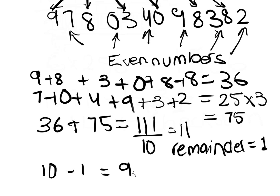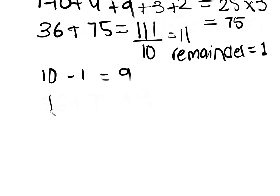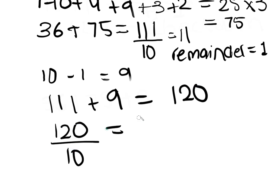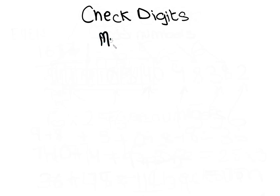If the remainder was 0, we would not subtract it from 10. Now let's do the recalculation. We add all the odd-position digits together, including the check digit this time. So we add 36, 75, and 9 — that is, 111 plus 9 — which gives us 120. Now we divide 120 by 10, and if the remainder is 0, then the check digit 9 is correct. Since our remainder is 0, the check digit 9 is confirmed correct.